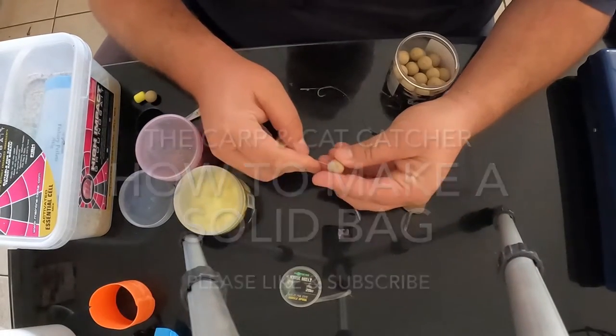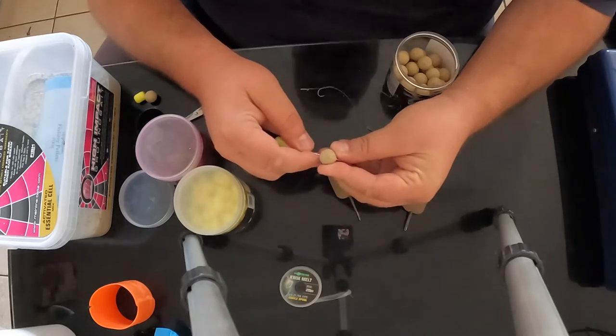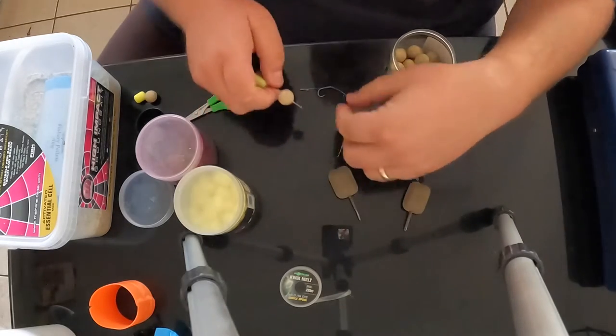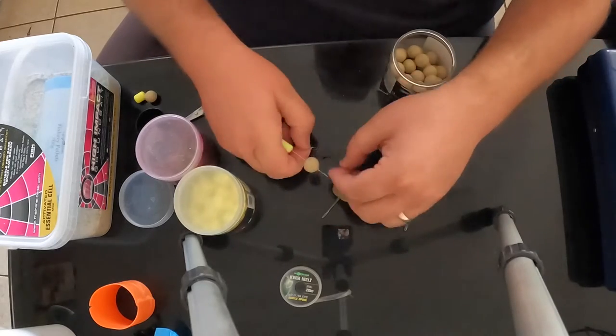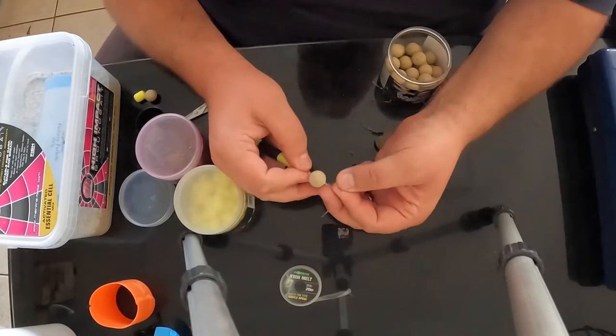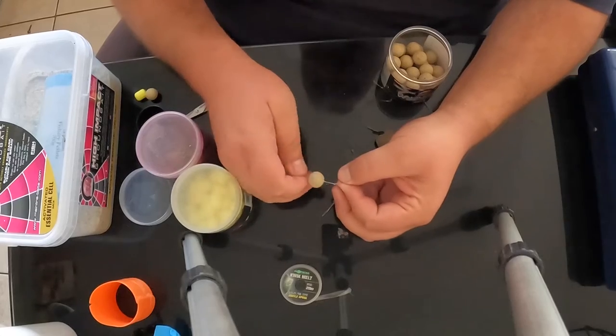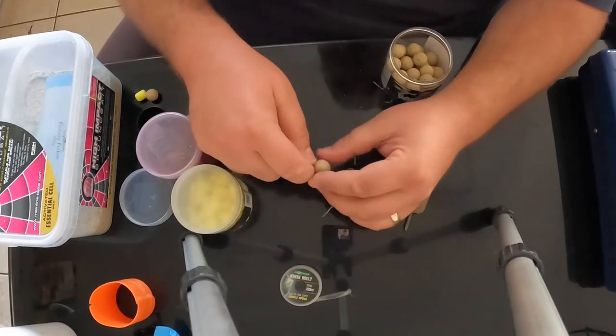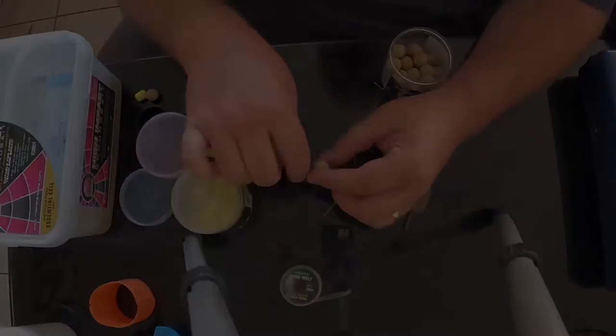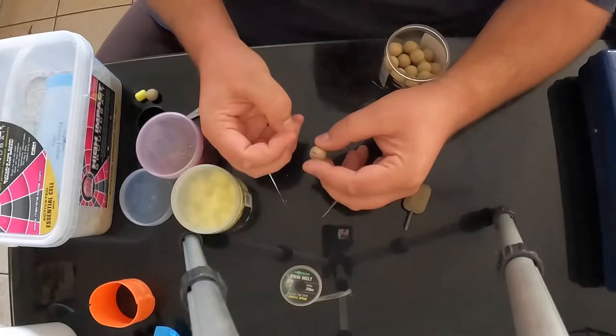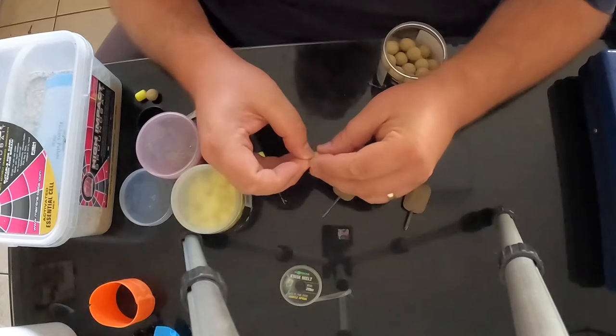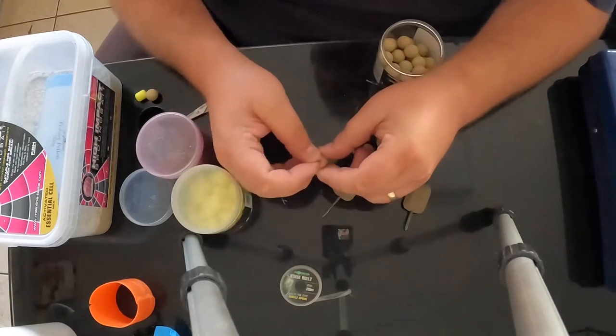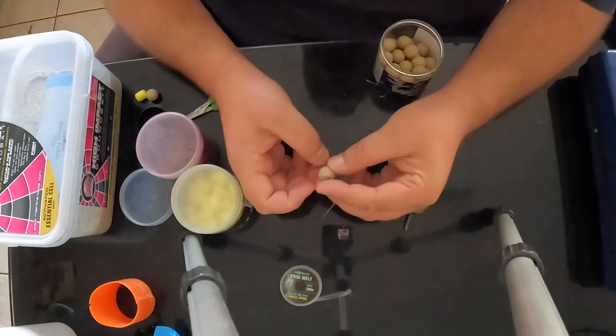I'm just going to start by putting a fresh bait onto a bait needle and then putting that onto our hair rig that we've got ready tied. Once that's on the hair, we just top that off with a boiler stop or an extender stop if it's a touch too short.